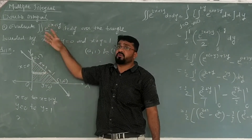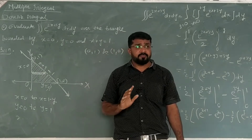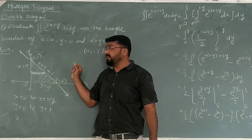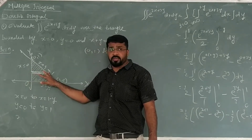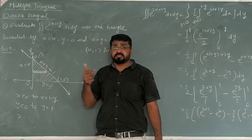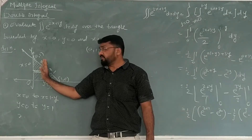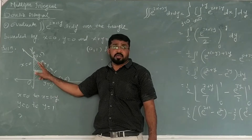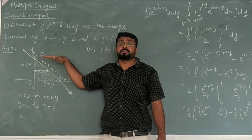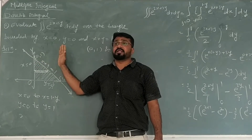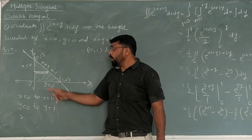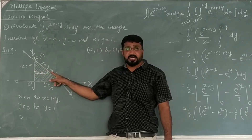Now we have to find out the limits of x and the limits of y. Here we look at the horizontal strip. This horizontal strip will give the limits of x. I can also take the vertical strip — if I take the vertical strip, it starts here and ends at the line x plus y equals 1. So the horizontal strip gives the limits of x.